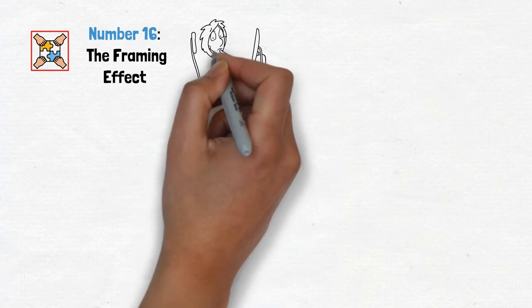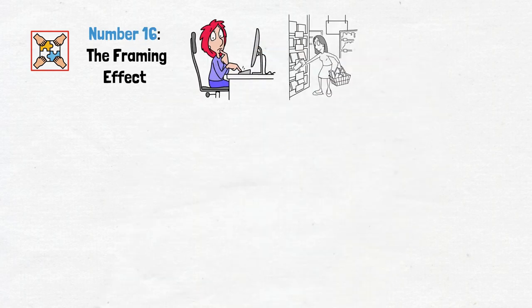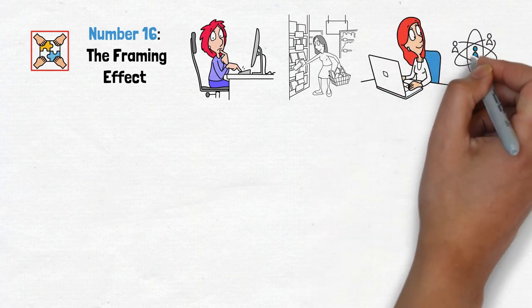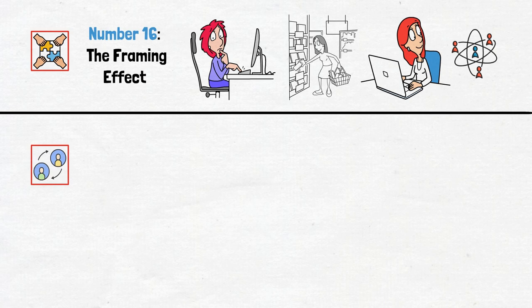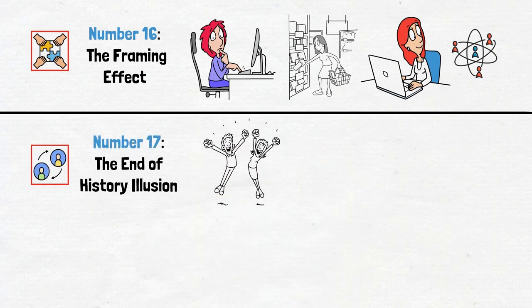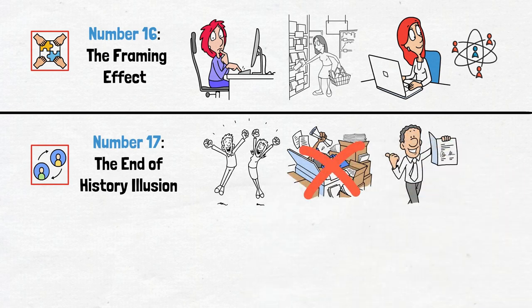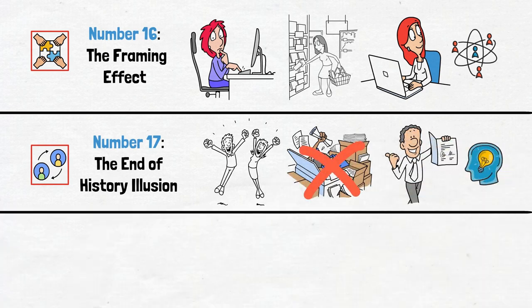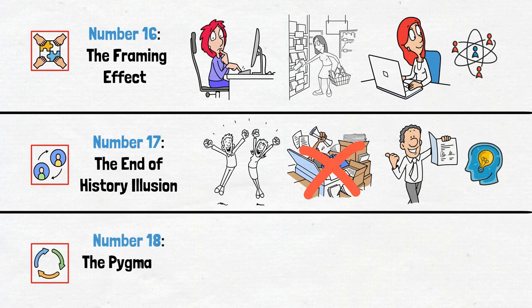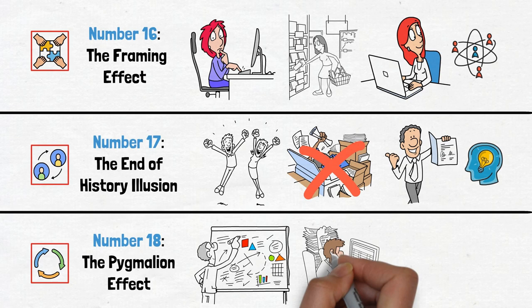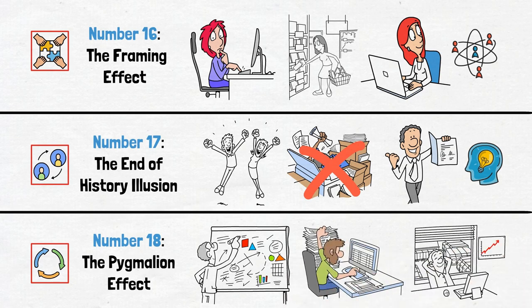Number 16, the framing effect. How information is presented can influence your decisions. Look beyond the framing and consider all perspectives. Number 17, the end of history illusion. Embrace change and recognize that who you are now isn't who you'll be forever. Keep evolving and growing. Number 18, the Pygmalion effect. Set high expectations for yourself and watch your performance soar. Believe in your abilities and aim for the stars.